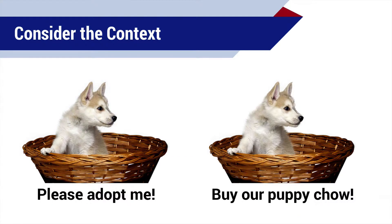Now that you know what alternative text is and why it's so important, let's talk about how to write effective alt text for the visuals in your content. The first thing you should do when writing alt text is consider the context of the visual. Here's the same picture of a puppy used in two different contexts. Under the picture on the left, text reads 'Please adopt me,' and on the right it reads 'Buy our puppy chow.' Even though the images are identical, the contexts create a significant difference in the type and amount of detail most people would want to hear. On an animal shelter's website, you'd want lots of details about physical characteristics and general attitude. But if it's just a generic visual on an advertisement, the picture doesn't really provide information that the reader needs to know.